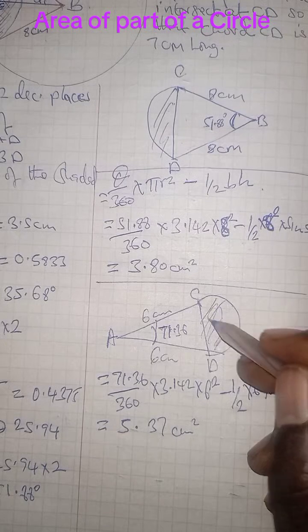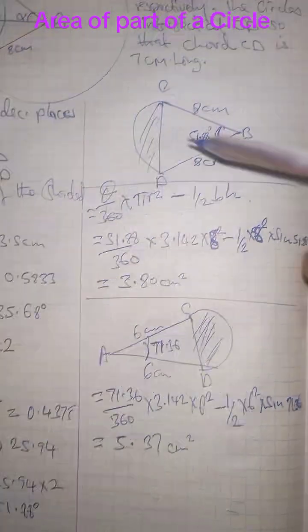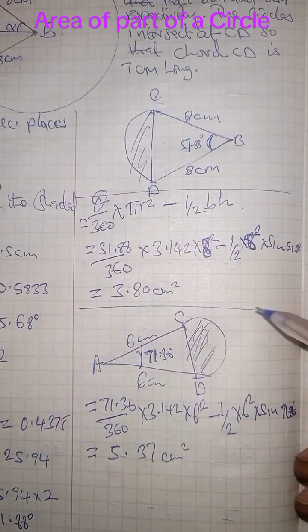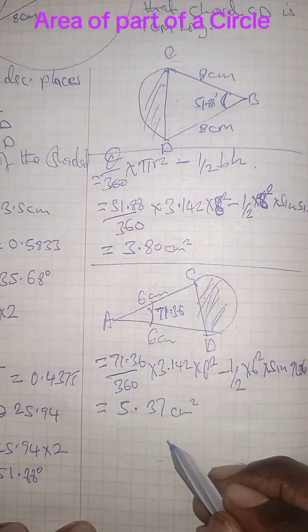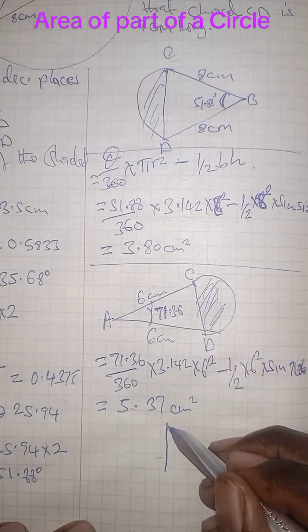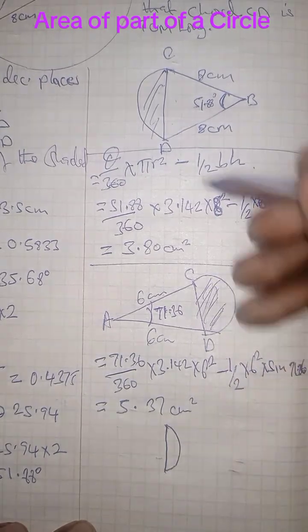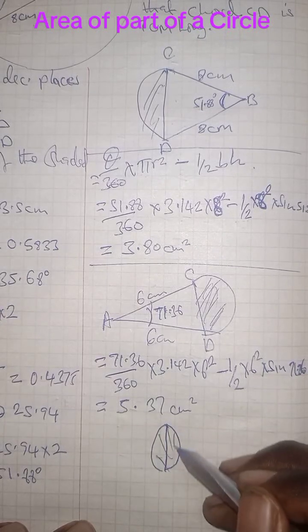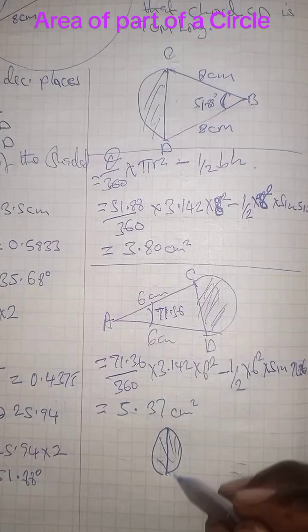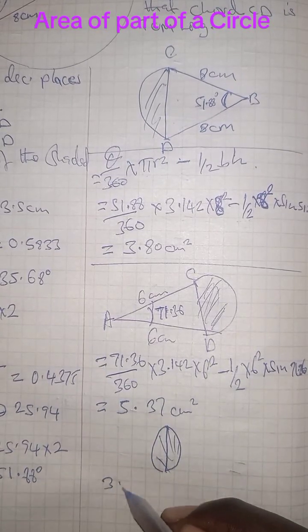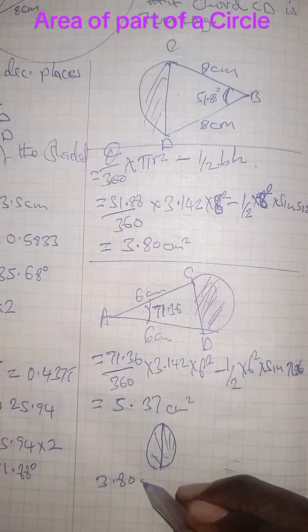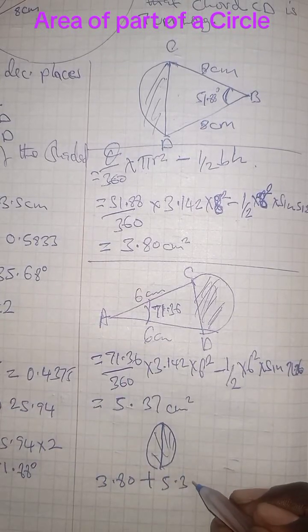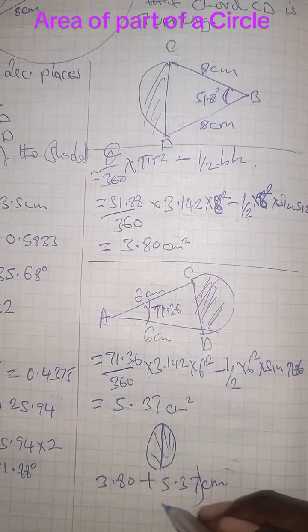We have found this area is 5.37 cm squared, we have found this area is 3.8 cm squared. We have now this part and this part. What we just need to do is to match them together. So the area of the shaded part will take 3.80 add 5.37, and this is cm squared. We should be able to get 9.17.